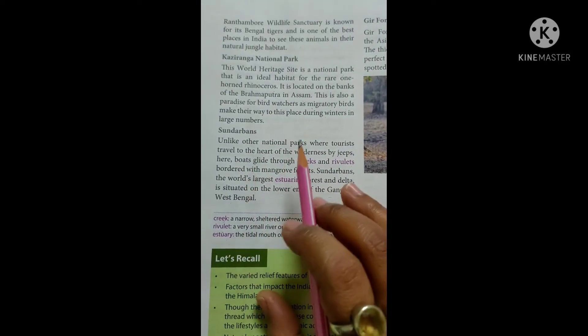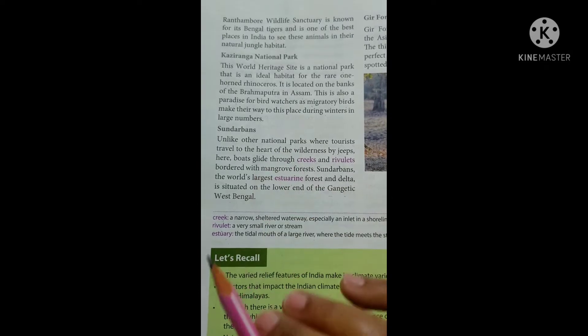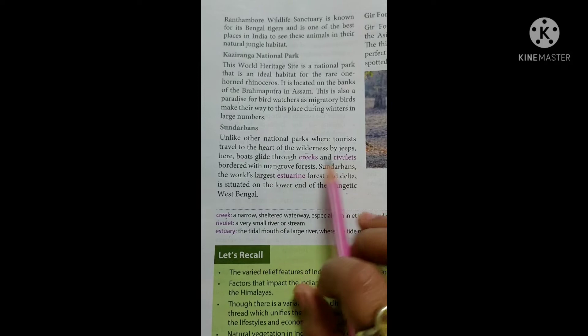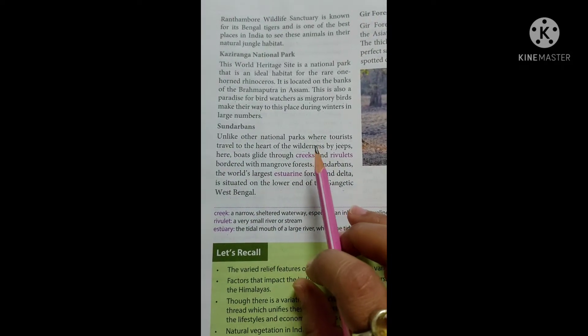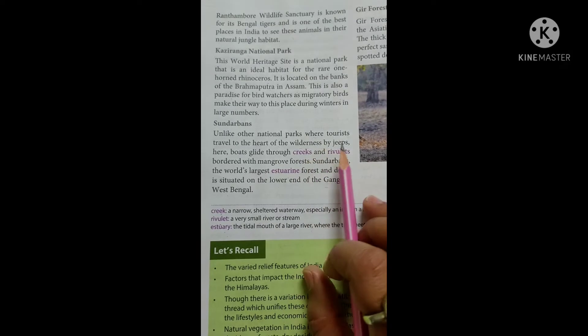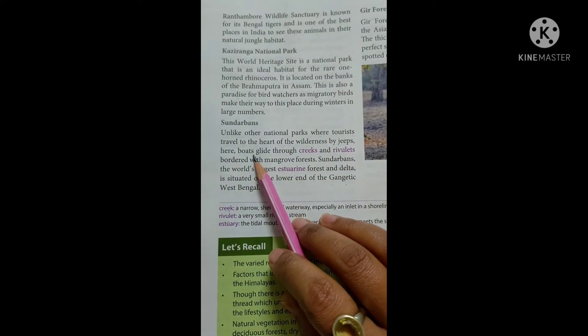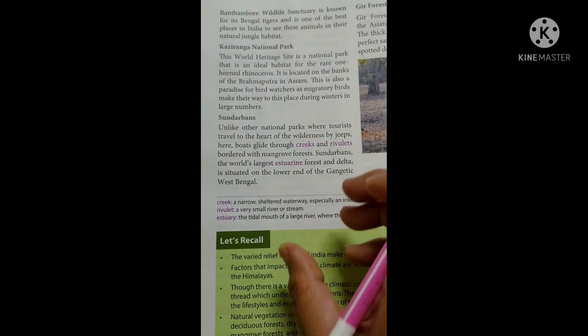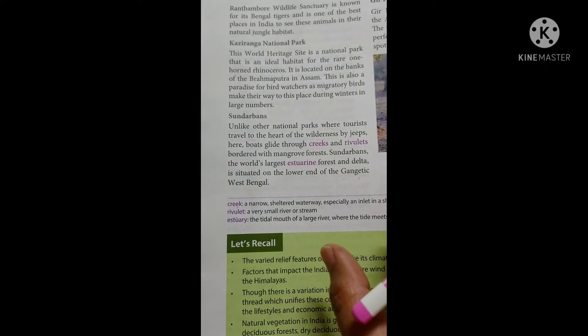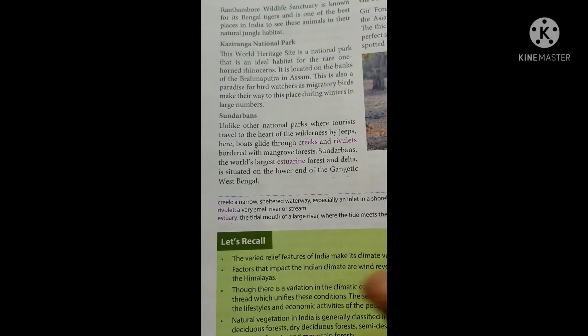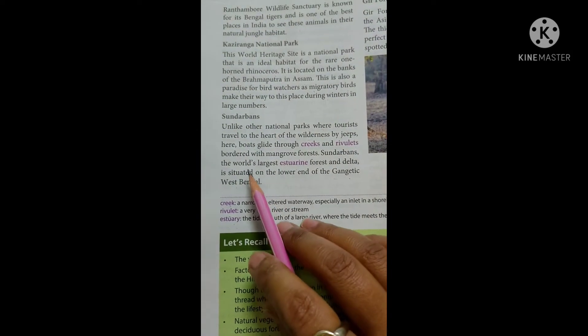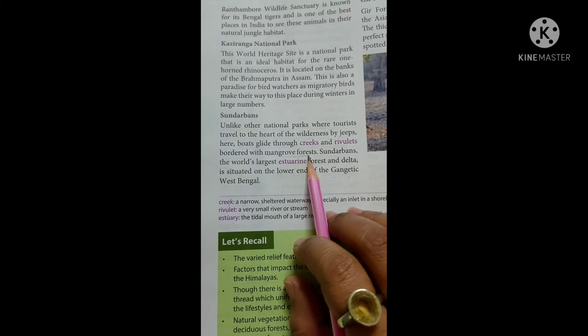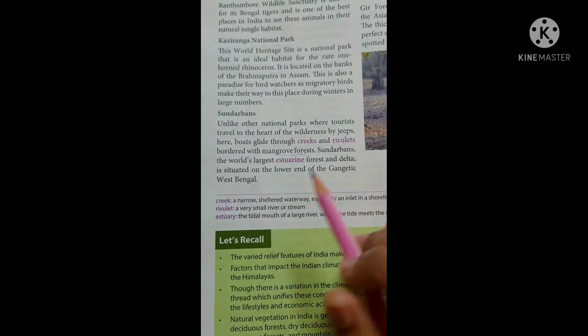And which national park is this? Unlike other national parks, tourists travel to the heart of the wilderness by jeep. But where can people travel? Boats. The small-scale boats are made in the water. The boats are made in the forest. And which forest? People are made in the mangrove forest.